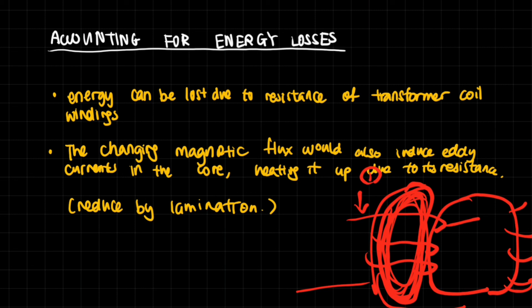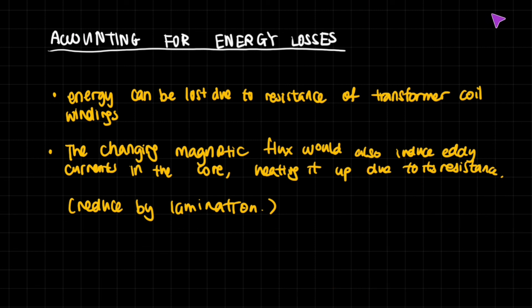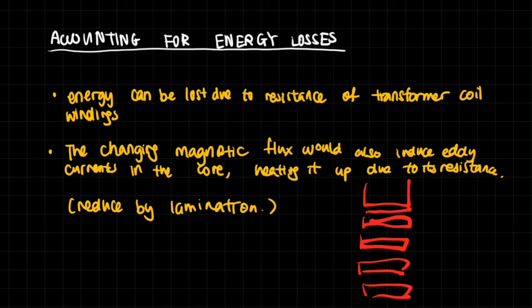You can reduce eddy currents by lamination. This means chopping up the iron core into separate plates and placing an insulator over each of them. This reduces the eddy currents that can flow through the core, while still allowing the core to intensify the changing magnetic flux. That's how we account for energy losses in transformers — hope this was useful and thank you for watching.